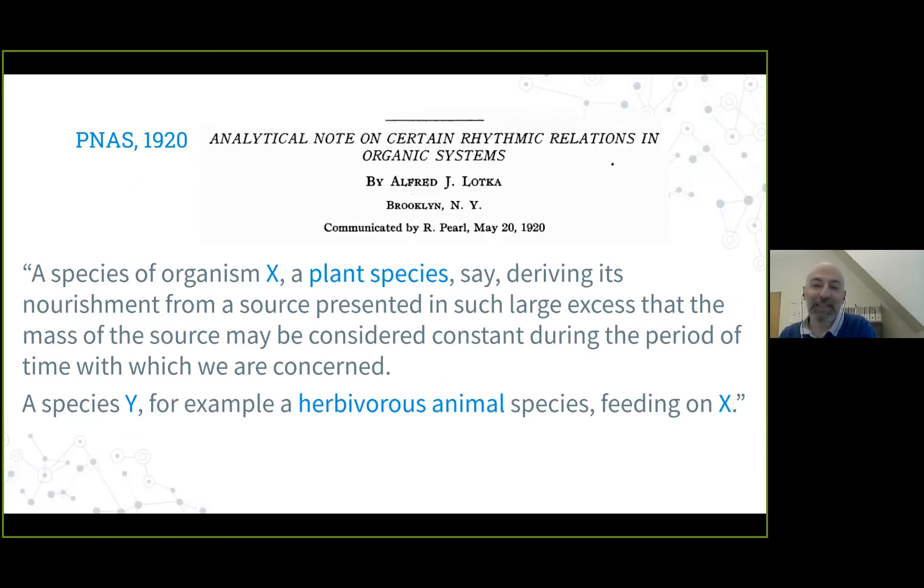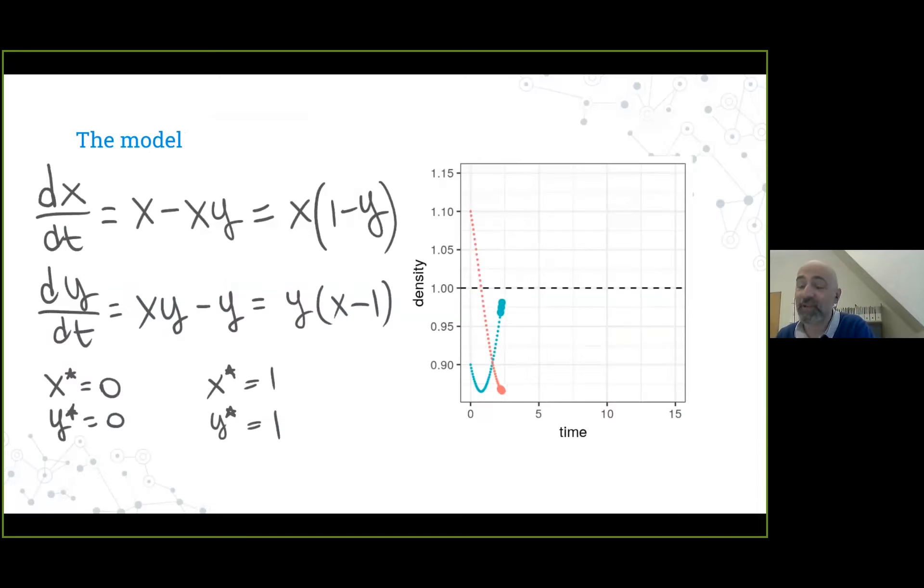Back to the paper: he was describing a species X, a plant species deriving its nourishment from a source presented in such large excess that the mass of the source may be considered constant during the period of time which we are concerned. Then a second species Y, for example, an herbivorous animal species feeding on X. He really had this kind of population dynamics in mind.